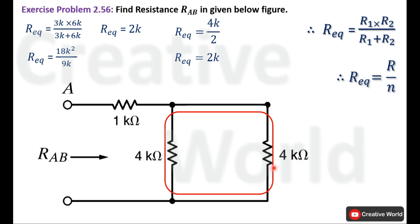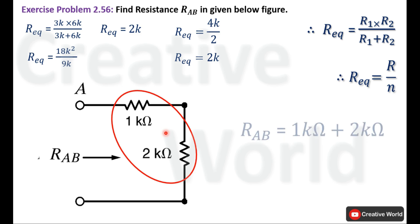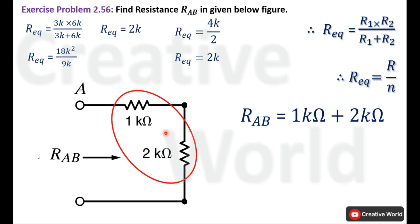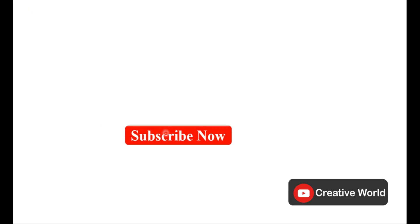Now we can calculate resistance R_ab between the two points. These two resistances are connected in series, so R_ab equals the sum of both: 1 kΩ plus 2 kΩ equals 3 kΩ. So the value of R_ab is 3 kΩ. This completes exercise problem number 2.56.